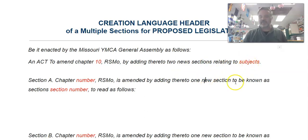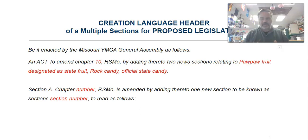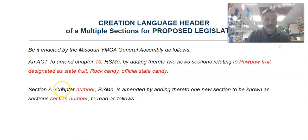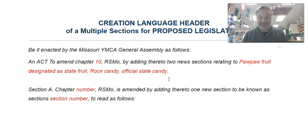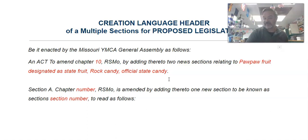So in this case we're just going to do two — two new sections related to the two subjects we're covering, which are very similar. This reads: 'Two new sections related to pawpaw fruit designated as state fruit, and rock candy as official state candy.' So I'm going to create a state fruit and a state candy for Missouri. There is actually a state fruit tree — the pawpaw tree — but there's no state fruit. So let's make the state fruit from the state fruit tree. Makes sense.